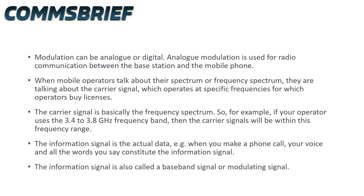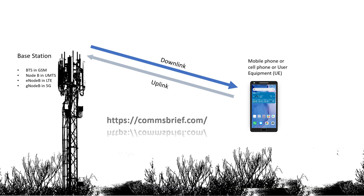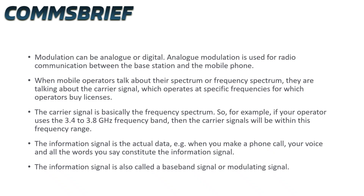Modulation can be analog or digital. Analog modulation is used for radio communication between the base station — so the cell tower — and your mobile phone. When mobile operators talk about their spectrum or frequency spectrum, they are talking about the carrier signal. The carrier signal operates at specific frequencies for which mobile operators have to buy licenses. The information signal is the actual data — for example, when you make a phone call, your voice and all the words you are saying constitute the information signal. The information signal is also called the baseband signal or modulating signal.